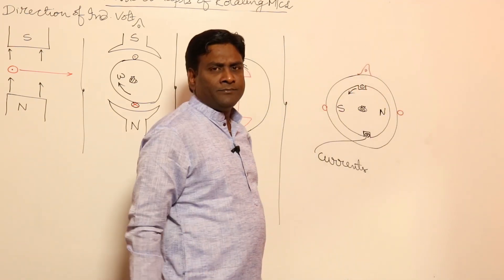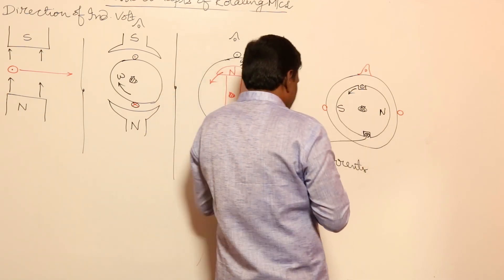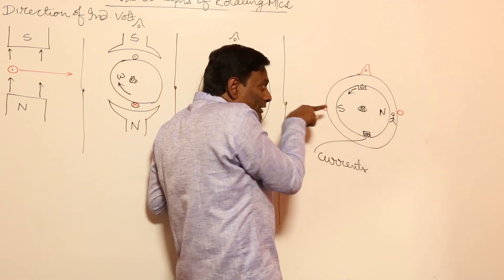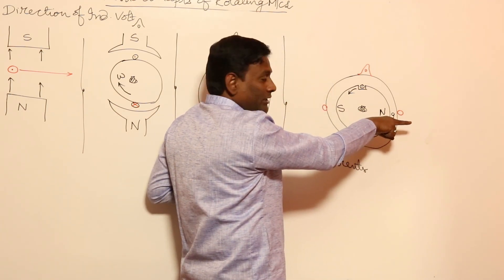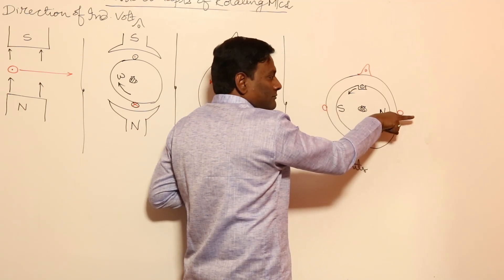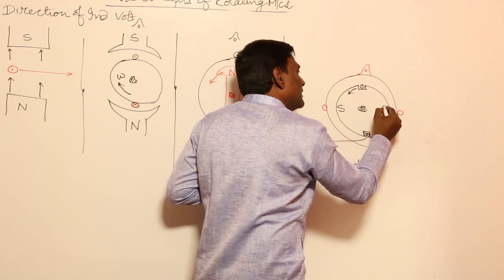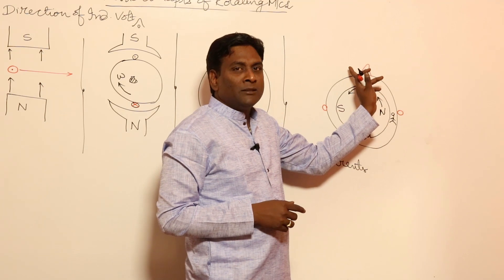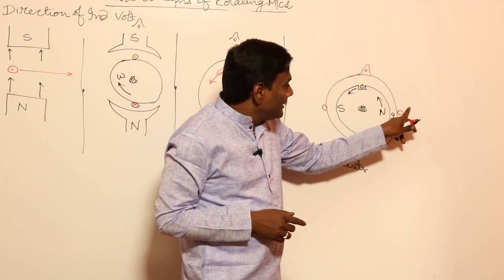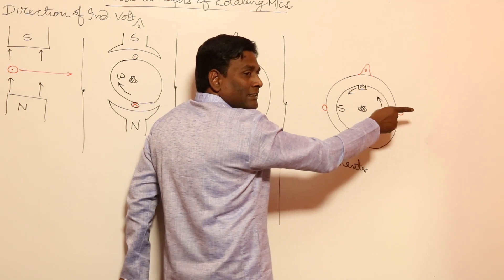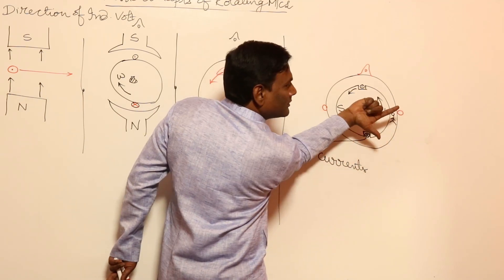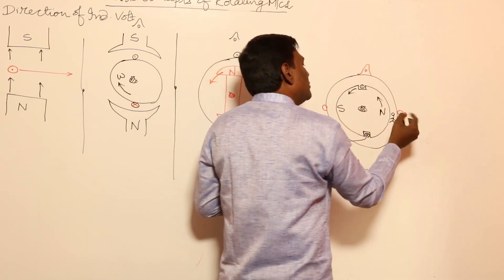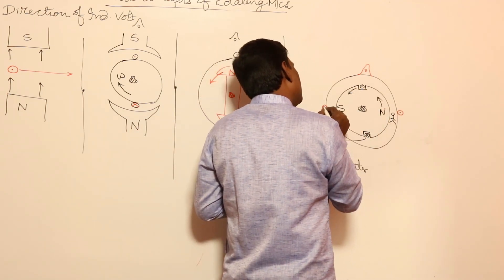Let us apply Fleming's right hand rule. Always, if you sit in the air gap, flux is going in this direction in the air gap. Keep the forefinger in this direction. Direction of rotation is in this direction — field is rotating in this direction means that with respect to field, conductor is rotating in downward direction. So flux is in this direction and motion of the conductor is in this direction. Middle finger gives induced voltage — induced voltage is dot here and cross here.